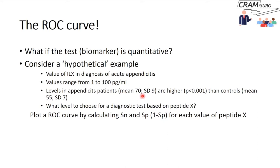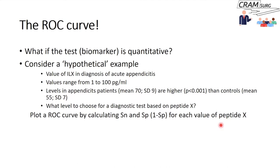Say you find a mean value of 17 in appendicitis patients and 55 in controls. You then face the dilemma: what threshold do you use — beyond what level do you say the patient has appendicitis, and below what level do they not? For these kinds of questions, plotting the ROC curve — the Receiver Operating Characteristic curve — can help you calculate the sensitivity and specificity, or one minus specificity, for each value of this interleukin.